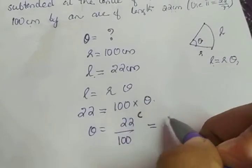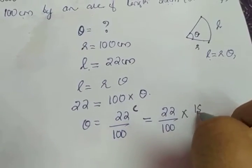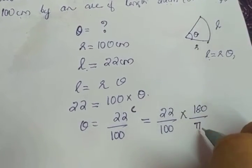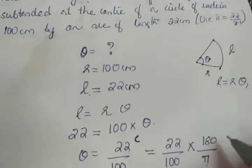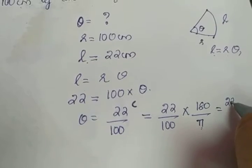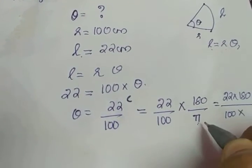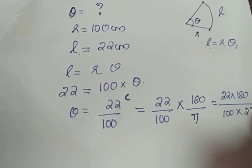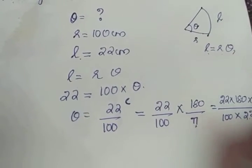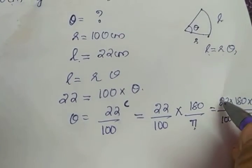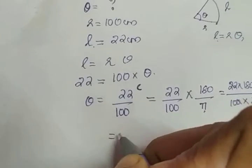To convert to degrees, we multiply 22/100 by 180 divided by π. Since π = 22/7, we get 22 × 180 divided by 100 × (22/7). The 22 in the numerator and denominator cancel, and simplifying gives 18 × 7 divided by 10.